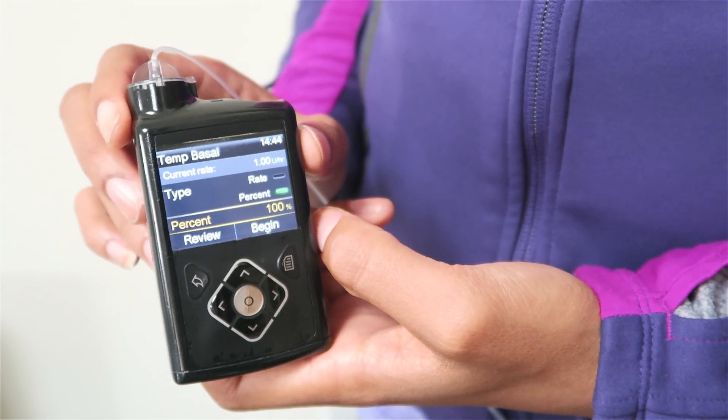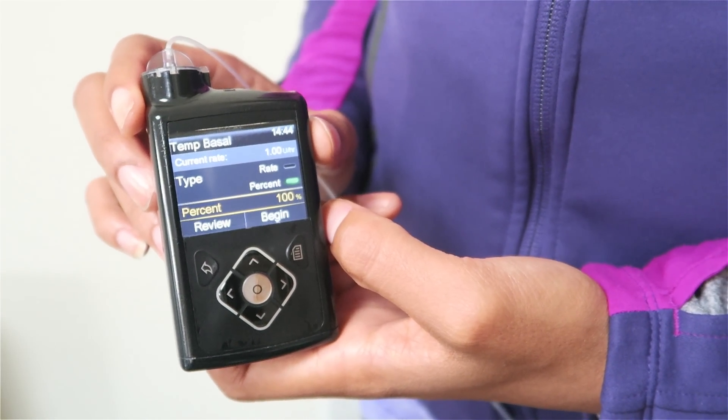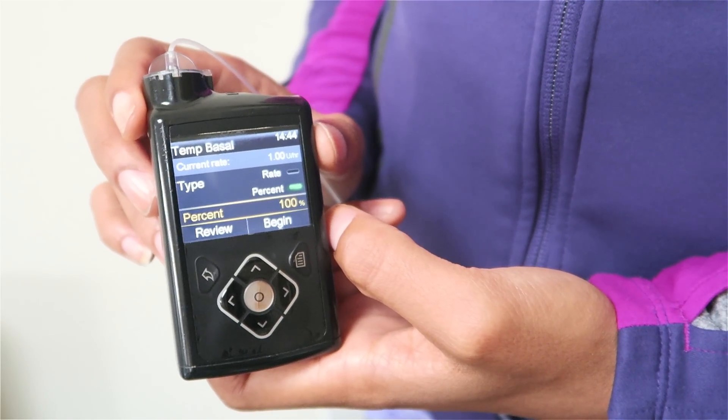But for me, for example, in a track session, I would need to reduce my background rate by a couple of percent just to make sure that my glucose levels are within the correct range.